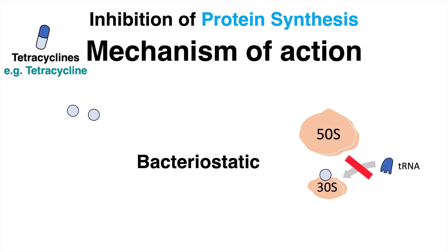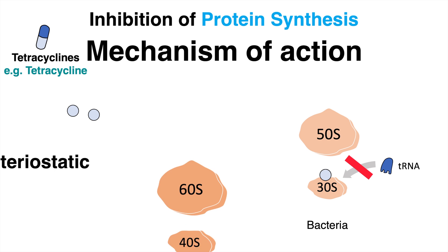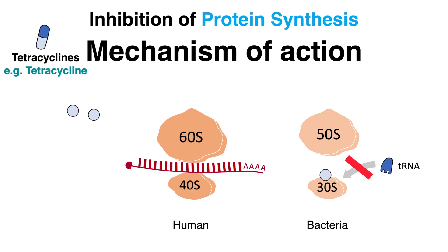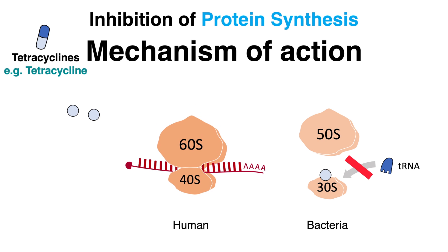How can this antibiotic specifically inhibit the translation of bacteria but not interfere with our own protein synthesis? Mammals, including humans, have different ribosomal subunits — a 60S and a 40S subunit. Upon medication, we can translate our mRNA without any problem.